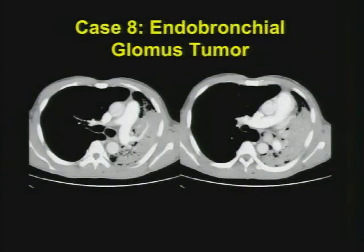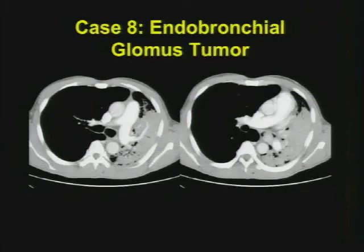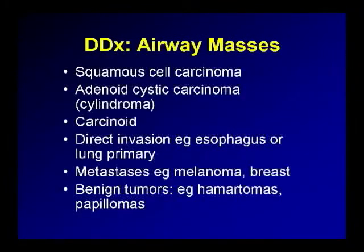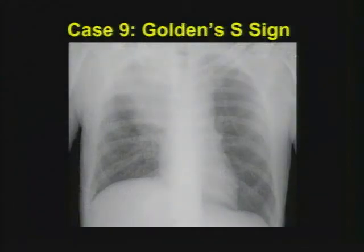Case number eight: an endobronchial glomus tumor — not something you'd expect on a rational differential. Notice this endobronchial mass with post-obstructive atelectasis and ipsilateral shift of mediastinal contents — it's quite vascular in appearance with a lot of enhancement. The things I'd think of would be vascular metastatic disease like breast cancer or melanoma, or carcinoid, which can be quite vascular as well. This happened to be a glomus tumor on surgical resection. This was also a better example of Golden's S sign: hilar mass, bulging, apical atelectasis from post-obstructive volume loss, and that nice curved contour between the collapsing upper lobe and the middle and lower lobes.